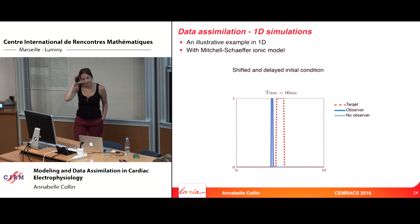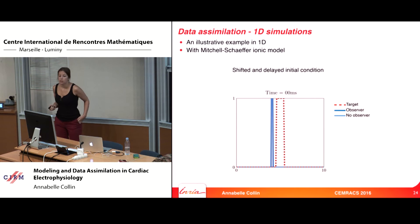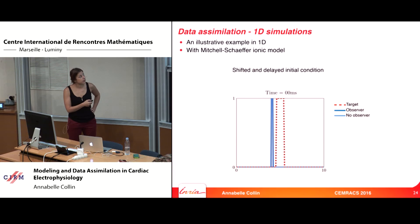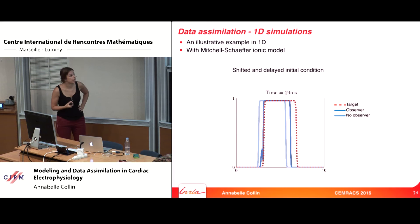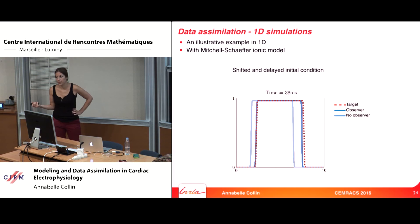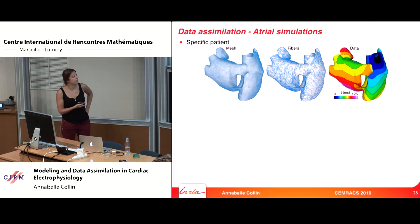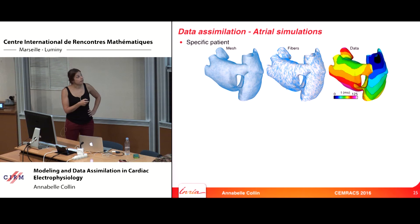I will show an illustrative 1D example. In red is the target front, in blue the observer front. I made an error in the initial condition: I shifted the initial condition and delayed it. We can see that the observer model is able to track the target model and correct the error over time. For the surface case of the atria, I consider a patient's mesh from CT or MRI with patient fiber data, and a depolarization map as input.